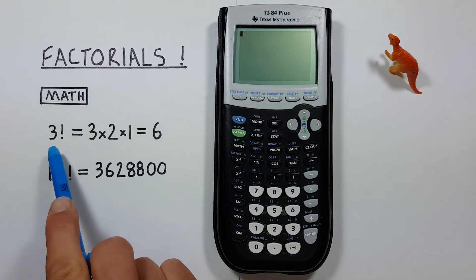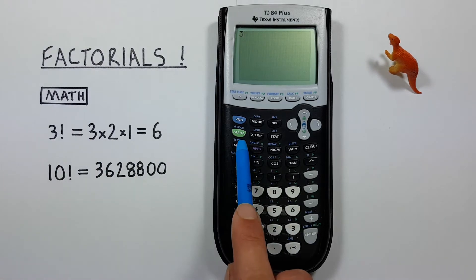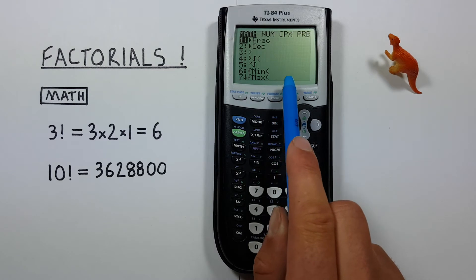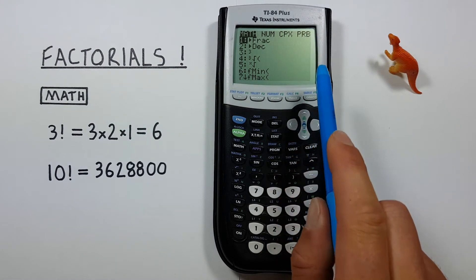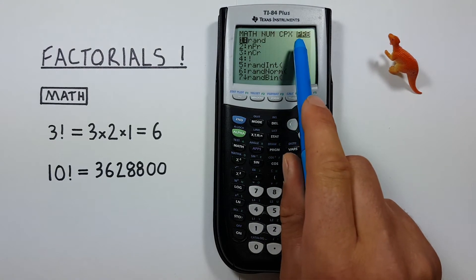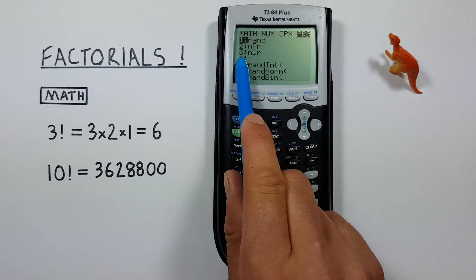So to do that we press the 3 and then we hit the math key. That's this one here. That'll bring us to this menu and factorials are under the PRB or probability menu. So you can either scroll to the right 3 times or to the left once so that PRB is highlighted. And now the fourth option is the exclamation mark or factorial symbol here.